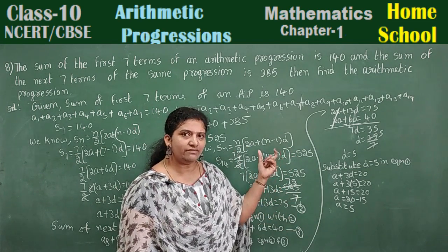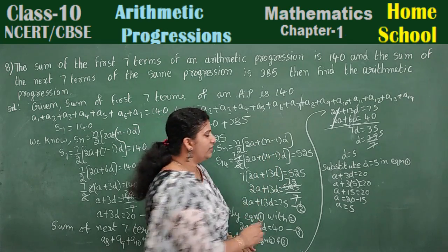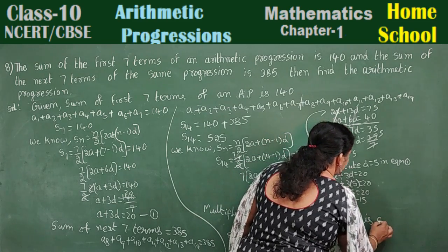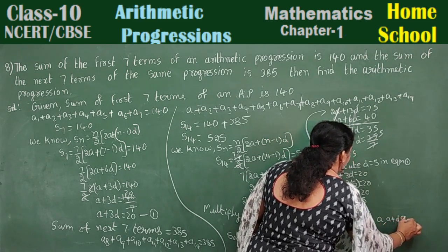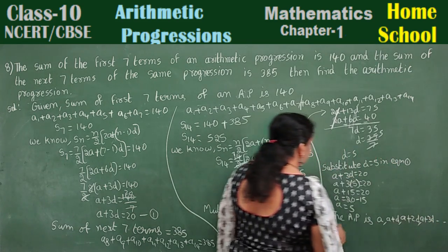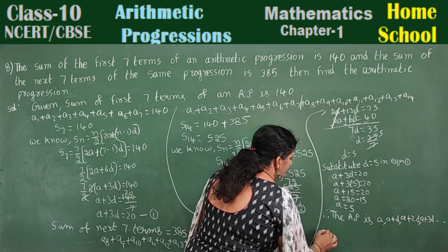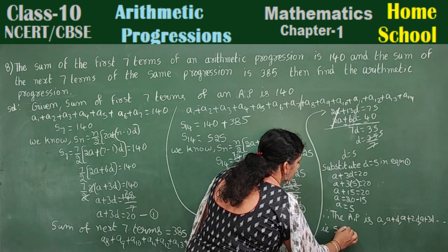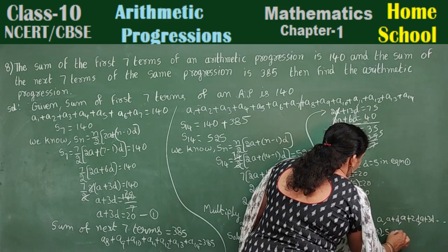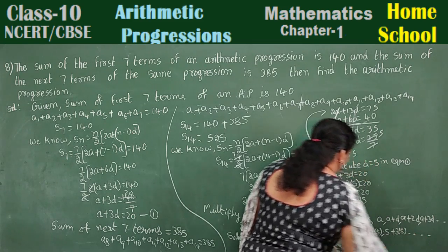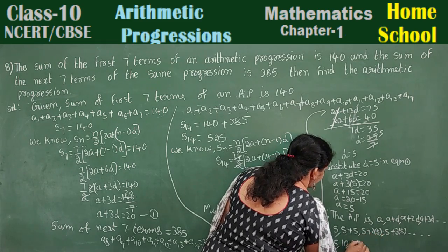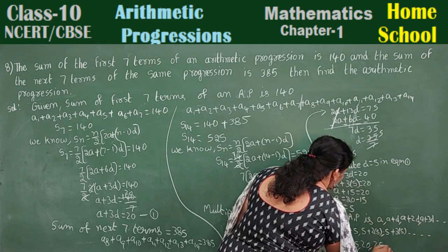The question asks us to find the arithmetic progression. The AP is written as a, a plus d, a plus 2d, a plus 3d, and so on. Substituting a equals 5 and d equals 5: the terms are 5, 5 plus 5 which is 10, 5 plus 10 which is 15, 5 plus 15 which is 20, and then 25, and so on.